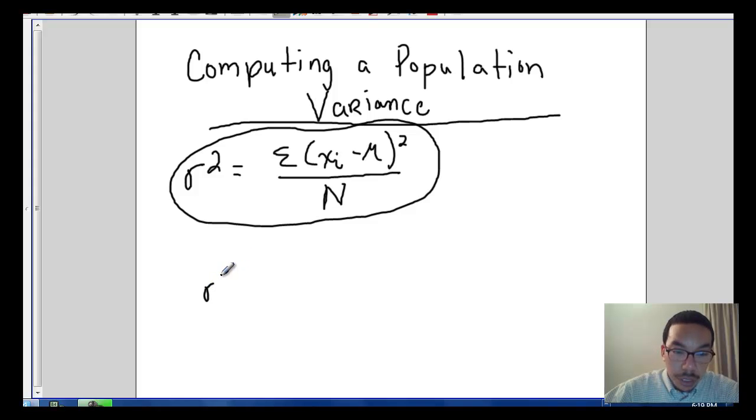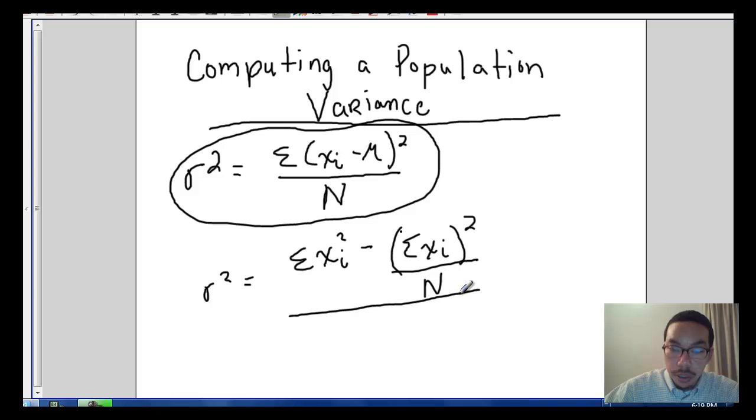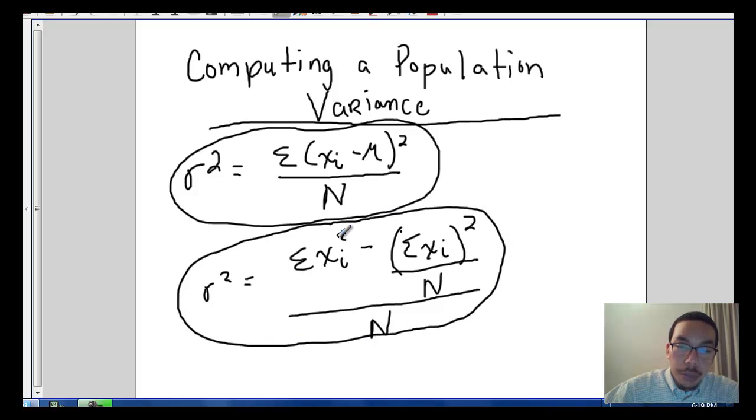We still use sigma squared equals the sum of x sub i squared minus sigma x sub i squared over N, and all of this is over capital N as well. So this is the computational formula for population variance.